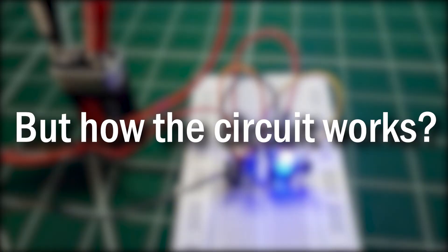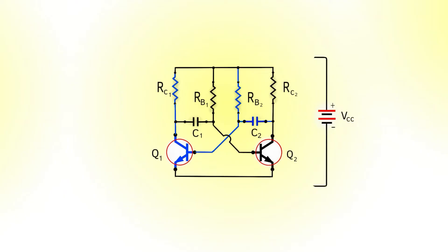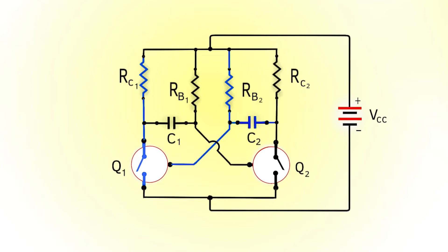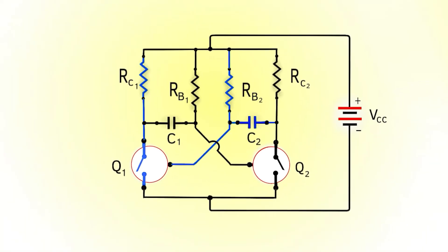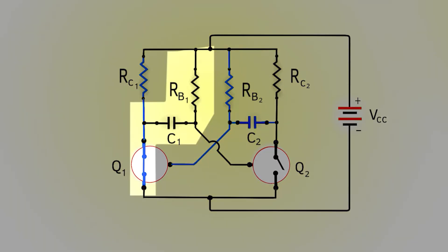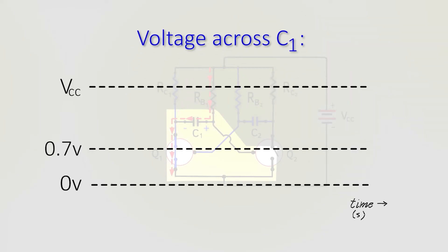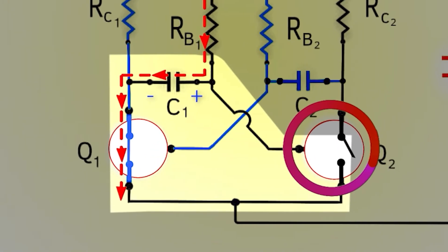But how does the circuit work? First, let's label each and every component. As you connect a voltage source, both transistors will try to activate through their base resistors RB1 and RB2. But no two transistors are exactly the same — one transistor will always activate faster than the other. Let's assume Q1 gets activated first. This forms an RC circuit and the capacitor charges along this path. The voltage across the capacitor appears between the base and emitter of the second transistor. Since voltage across a capacitor slowly rises from 0V, Q2 remains open because voltage is below 0.7V.